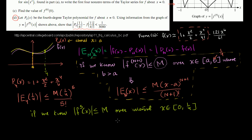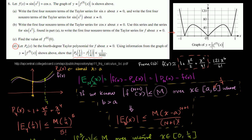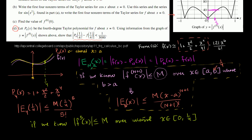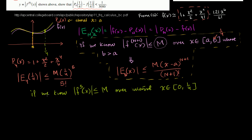Those are our a's and b's in this particular case. When you look at the graph — and that's exactly what they gave us, the graph of the absolute value of the fifth derivative — 1/4 is sitting right over here. We don't know exactly what value we hit there; it looks roughly like 31 or 32. But we know it's definitely less than 40 over the interval between 0 and 1/4. So we can pick M to be 40.